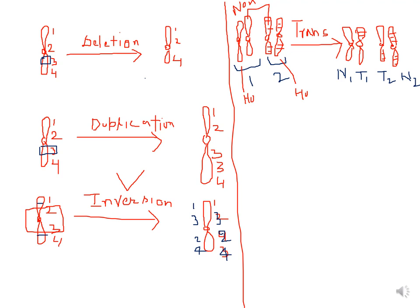The third example is inversion, where reverse orientation of genes takes place. Two cuts are made on the chromosome and a segment gets reverse oriented. In the inverted chromosome, the gene order becomes 1, 3, 2, 4 instead of the original 1, 2, 3, 4.